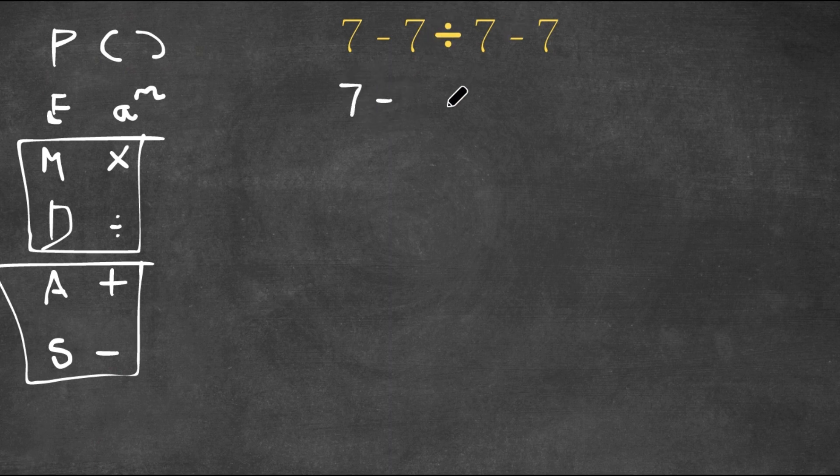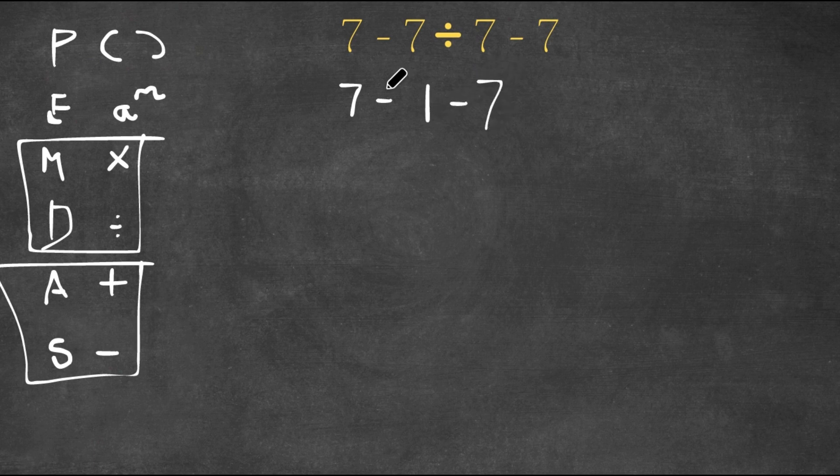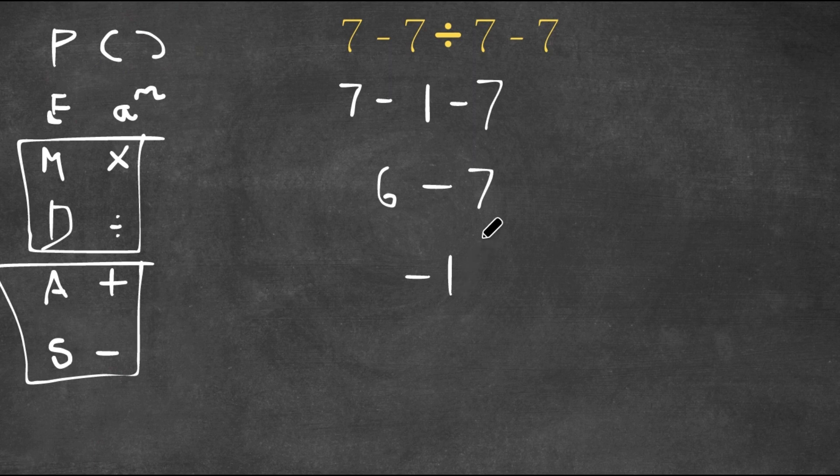7 minus 7 divided by 7 is 7 minus 1 minus 7. And now I check for multiplication and division again - there is none. So now I go down to addition and subtraction. I first do 7 minus 1, which is 6, then 6 minus 7. And 6 minus 7 is negative 1. So this is our answer.